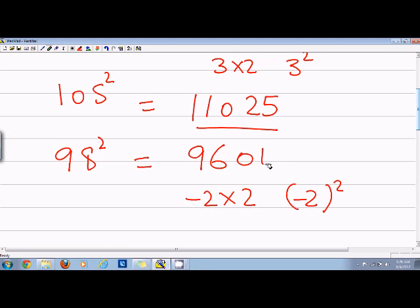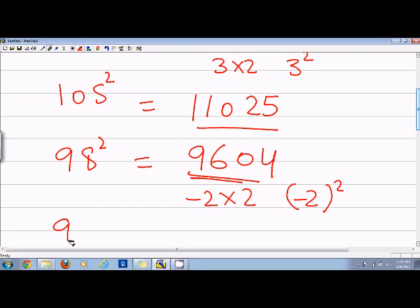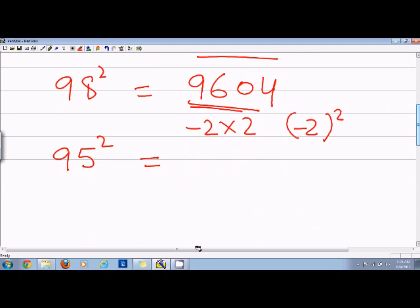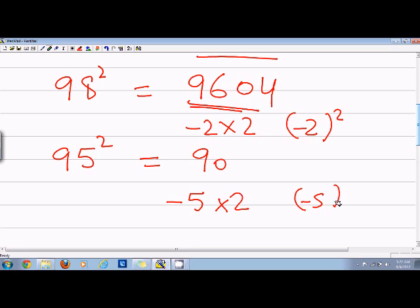Now similarly, if I have 95 square, in this case, I will say minus 5 into 2 is 10. So I'll say 90 and then minus 5 square, that is 25. So the answer is 9025.